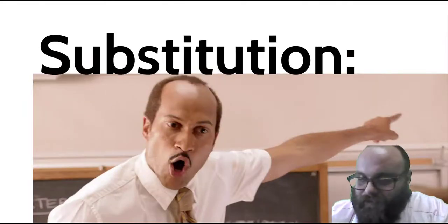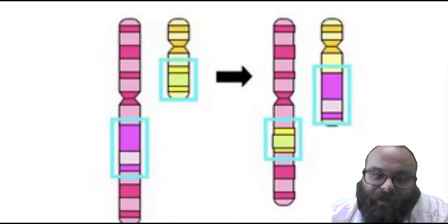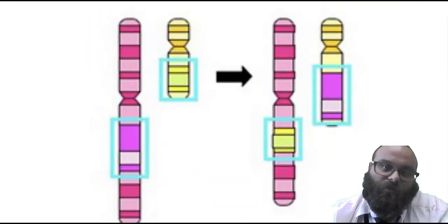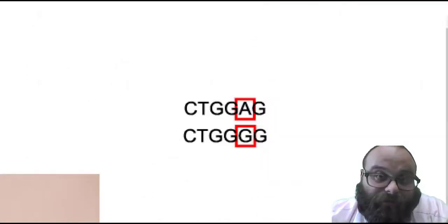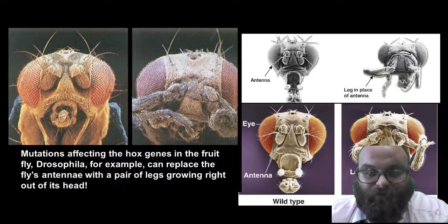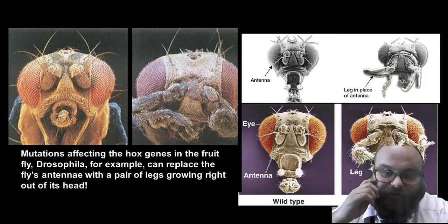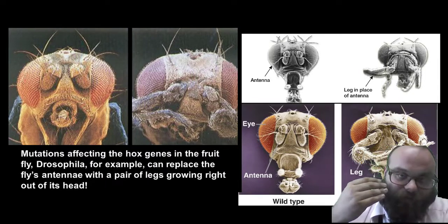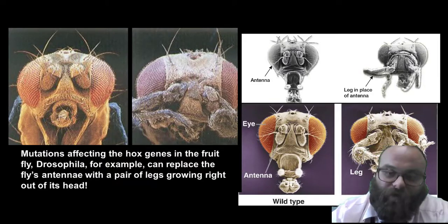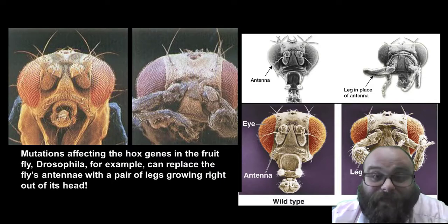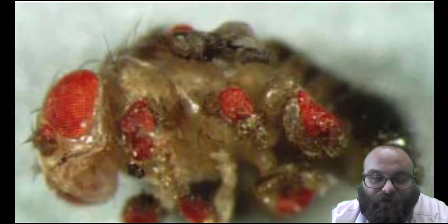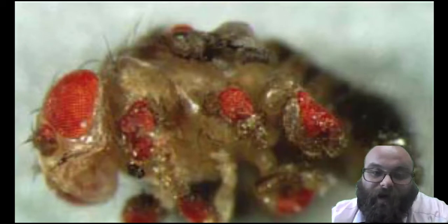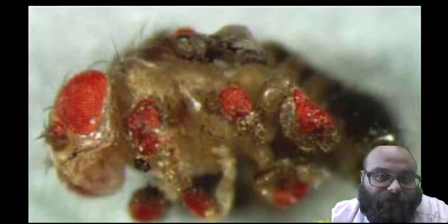Substitution mutations are when parts of one gene are replaced with a segment from another gene — they're swapped out. For example, the A and G in two genomes can be swapped. With fruit flies, scientists took the Hox genes for legs and replaced them where the genes for antennae should be — producing fruit flies with legs for antennae. They also took the genes for eyes and plugged them into the genes for legs, creating a fruit fly with eyes for legs. Both are substitution mutations.